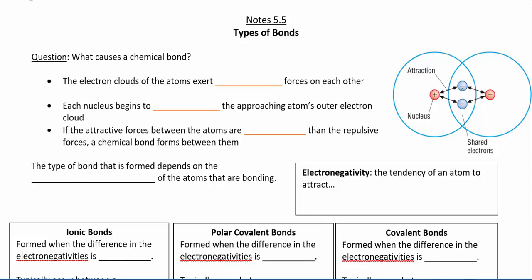As two atoms approach each other, the electron clouds are going to exert repulsive forces on each other, pushing the atoms apart. But if they're moving fast enough, they can overcome that repulsion and get close enough that the protons in the nucleus are able to attract the electron clouds of the other atom. If the attractive forces are greater than the repulsive forces, a chemical bond forms. This doesn't always happen — atoms often bounce off each other without enough energy to bond.